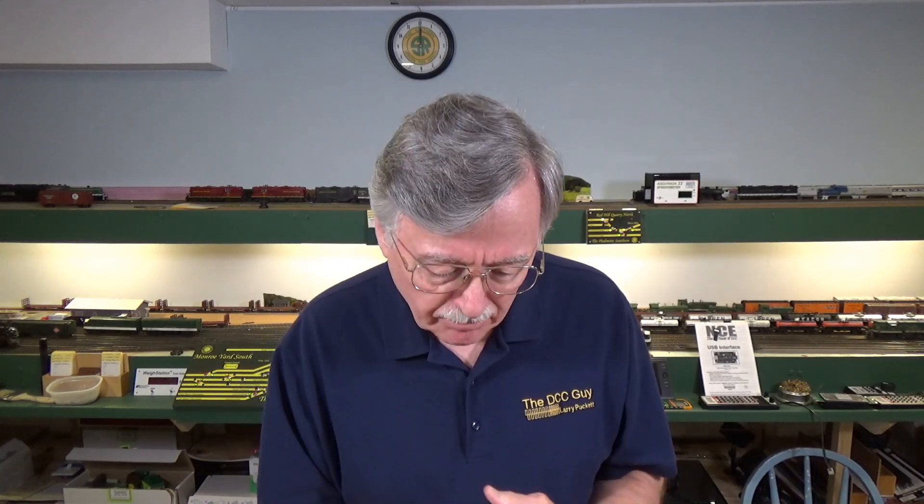Actually, it's fairly easy, and I was able to put together a circuit in just a few minutes with spare parts that I had in my parts box here in the basement. So let me go ahead, and I'm going to zoom down here onto the workbench, and we'll take a look at how you can quickly and easily and inexpensively put together an electronic circuit that will give you flicker-free lighting in your cabooses and passenger cars.